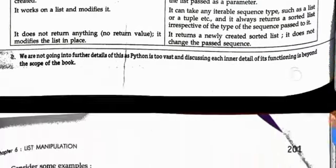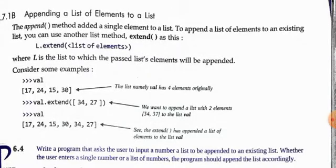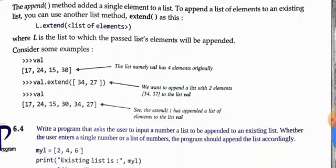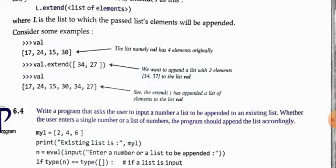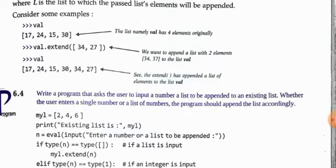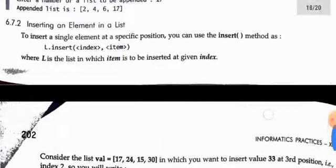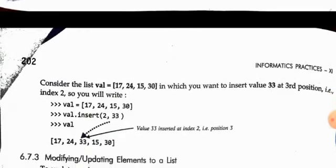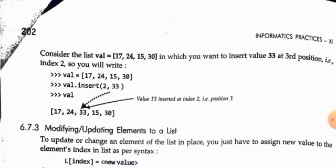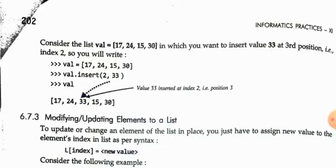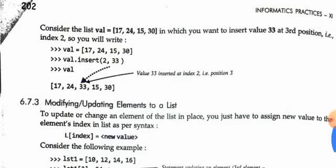For appending a list of elements: if well = [17, 24, 15, 30] and you write well.extend([34, 27]), the final list becomes [17, 24, 15, 30, 34, 27]. For inserting an element: well.insert(2, 33) inserts 33 at index 2, replacing what was previously at that position — so 15 at index 2 is shifted and 33 takes its place.